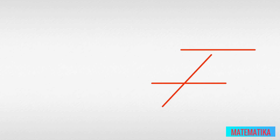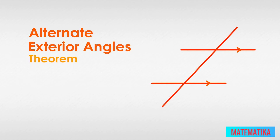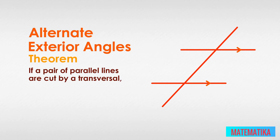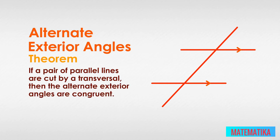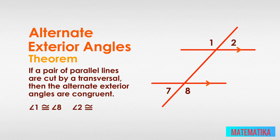Now let's look at this again with parallel lines. When two lines are parallel, the transversal creates congruent alternate exterior angles. The Alternate Exterior Angles Theorem states that if a pair of parallel lines are cut by a transversal, then the alternate exterior angles are congruent. Here we have a new pair of parallel lines crossed by a transversal. The exterior angles are angle 1, angle 8, angle 2, and angle 7. Because the lines crossed by the transversal are parallel, we can state that angle 1 is congruent to angle 8 and angle 2 is congruent to angle 7.